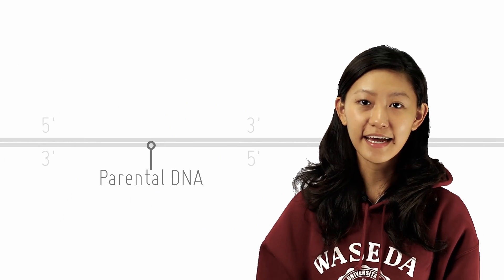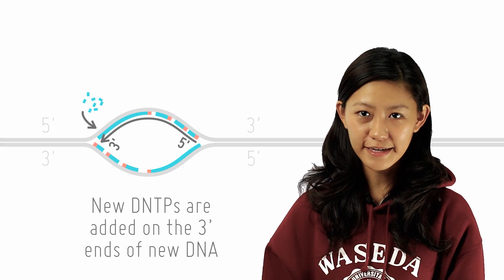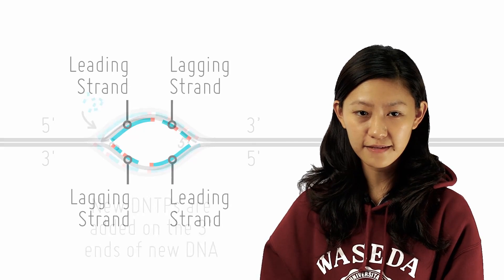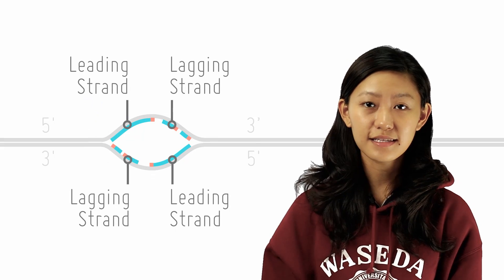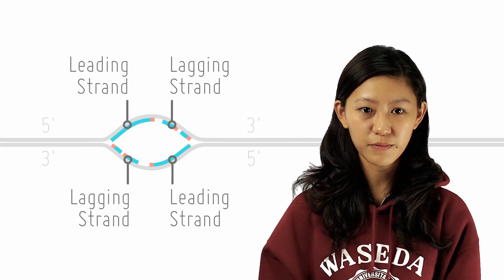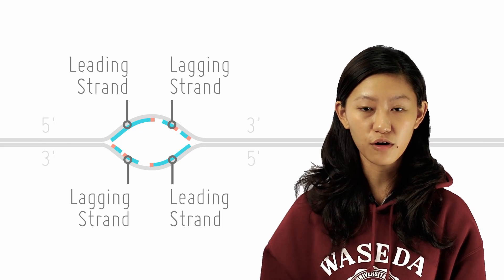Since parental strands are anti-parallel and DNA polymerase can only add DNTPs to the 3' OH end of an existing chain, for one of the strands, called the leading strand, it is synthesized continuously in a 5' to 3' direction as a replication fork opens up.